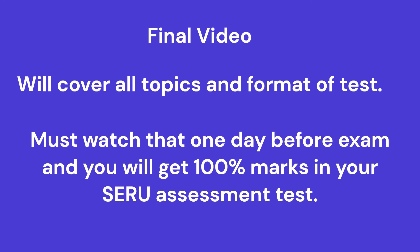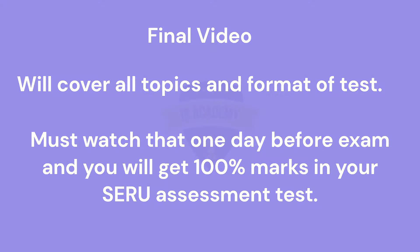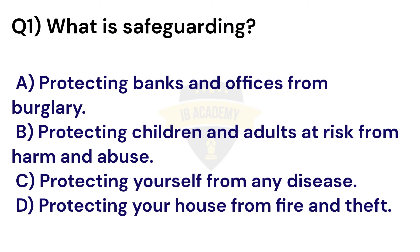There will be one final video covering everything you need to watch one day before the exam. Question 1: What is safeguarding? Option A: Protecting banks and offices from burglary. Option B: Protecting children and adults at risk from harm and abuse. Option C: Protecting yourself from any disease. Option D: Protecting your house from fire and theft. The correct answer is Option B. Safeguarding means protecting children and adults at risk from harm and abuse.